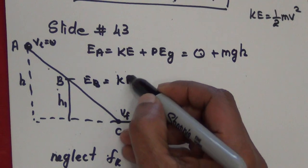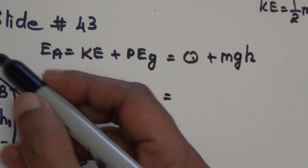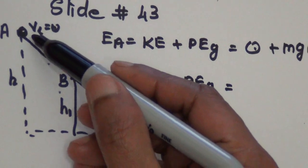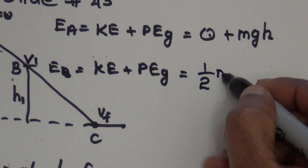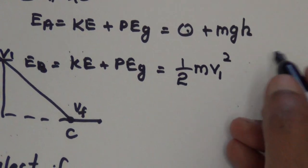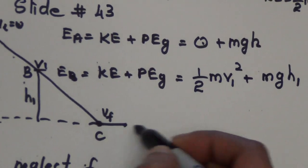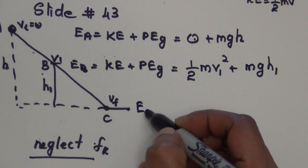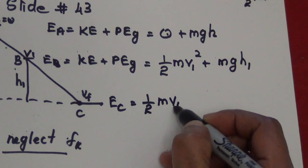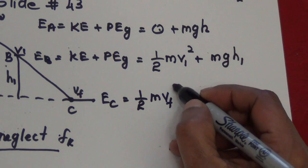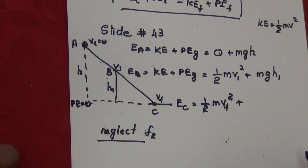At position B: kinetic energy plus gravitational potential energy. The speed will increase, so we can write ½mv₁². At position C, the velocity is even greater. I'm going to take position C as my zero potential energy level, so PE there equals zero.